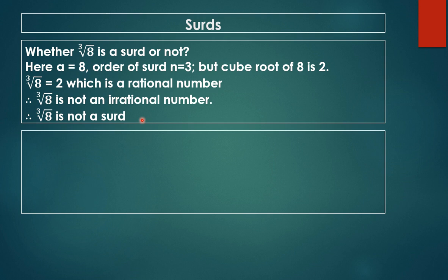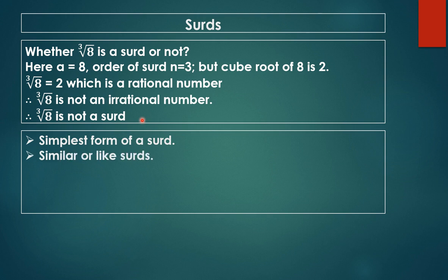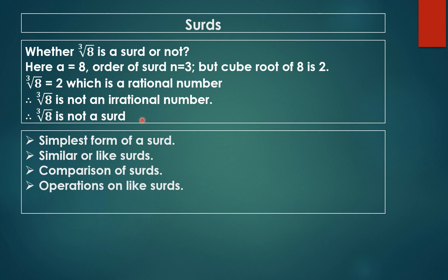In surds we are going to learn a few concepts: simplest form of a surd, similar or like surds, comparison of surds, operations on like surds, and rationalization of surds. I'll explain all these concepts by giving examples one by one.